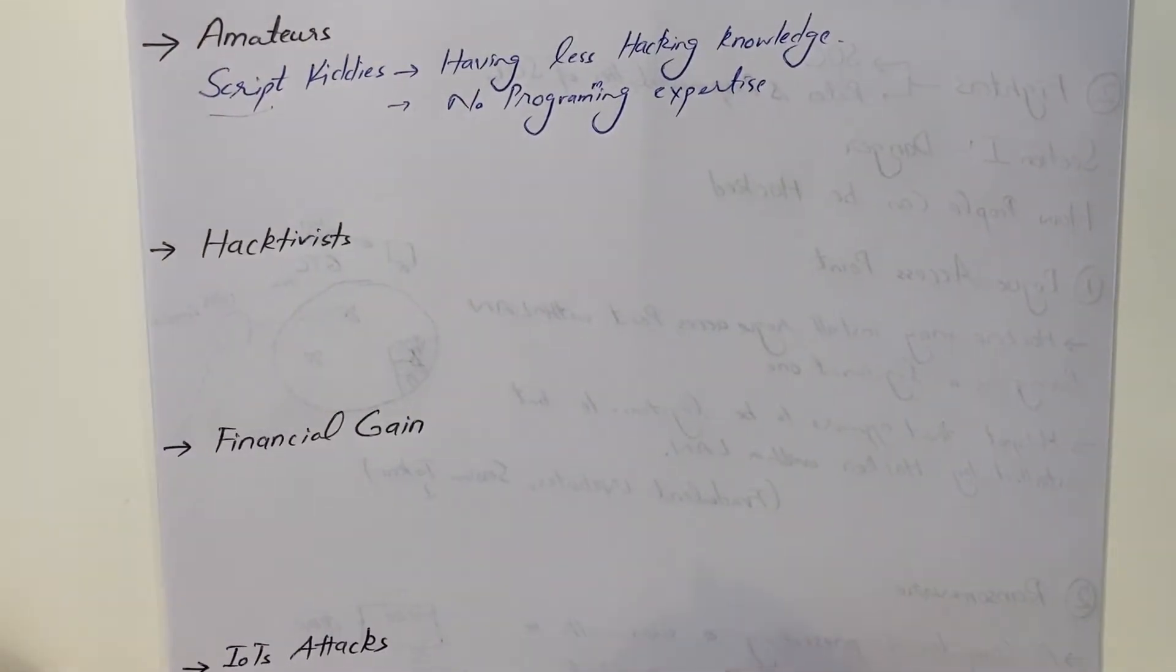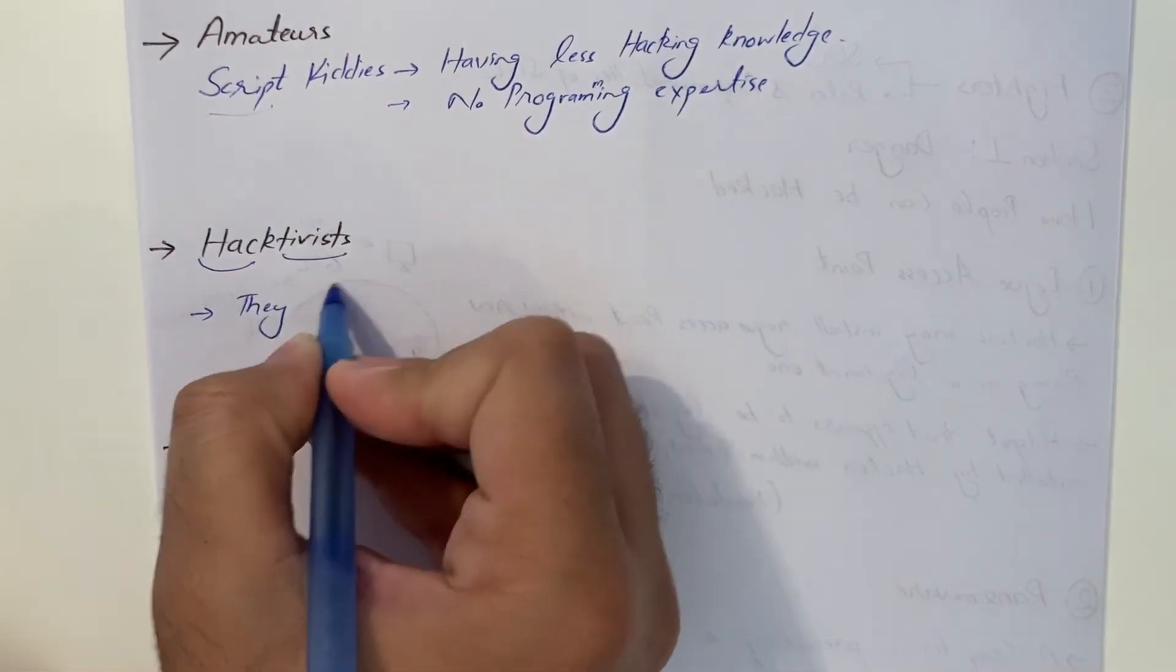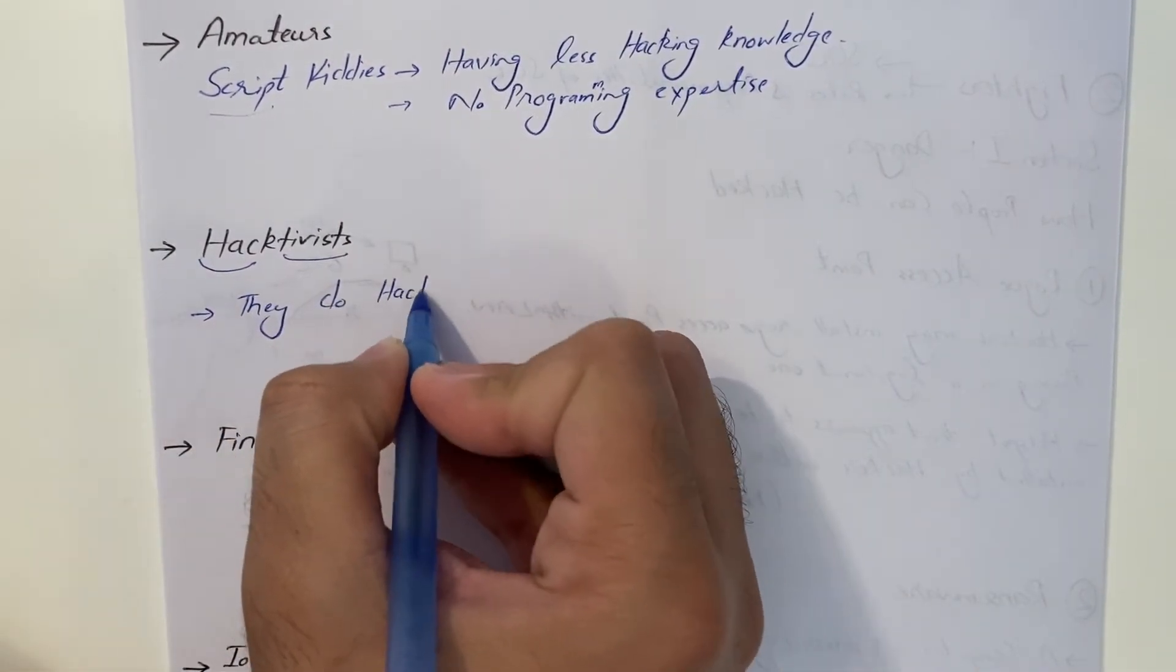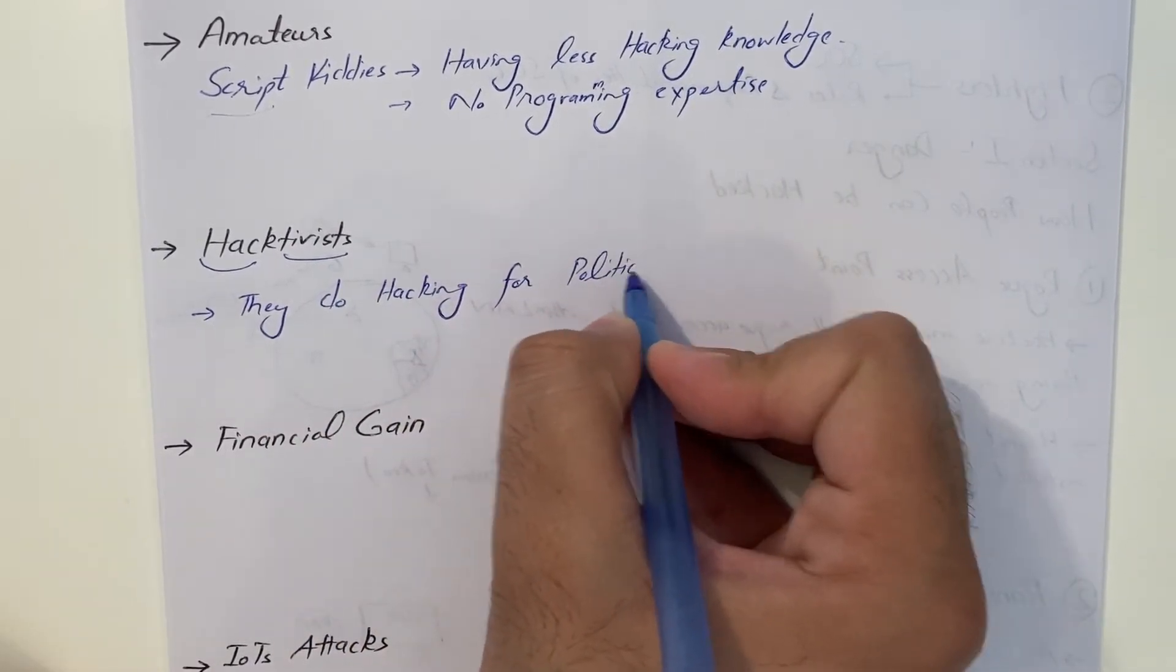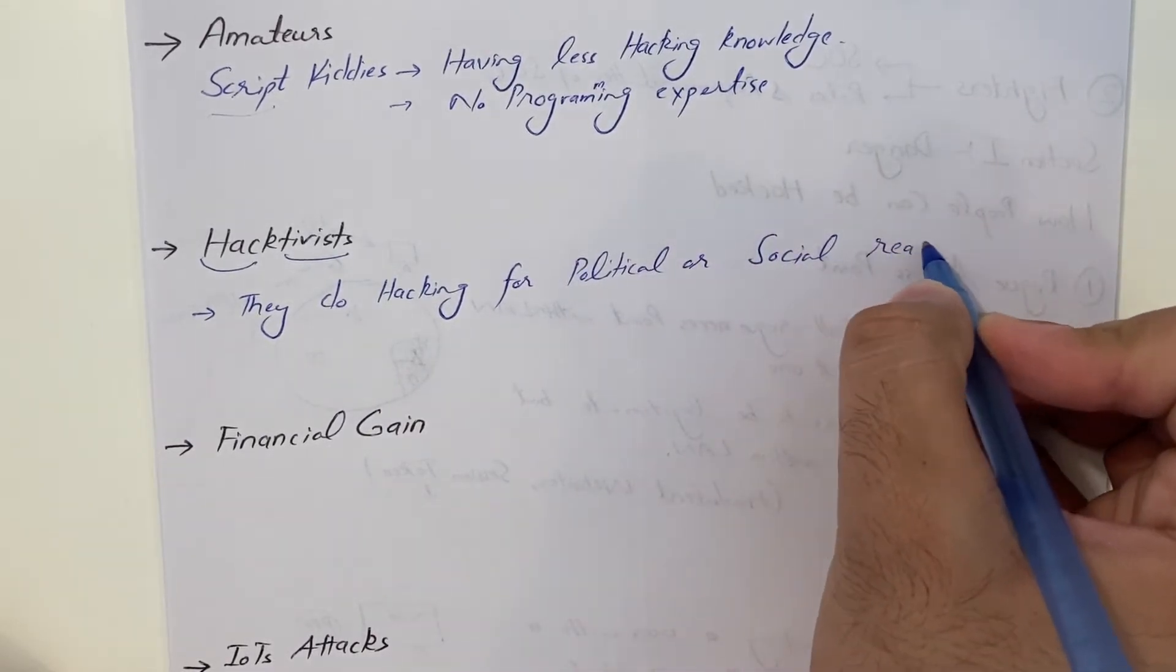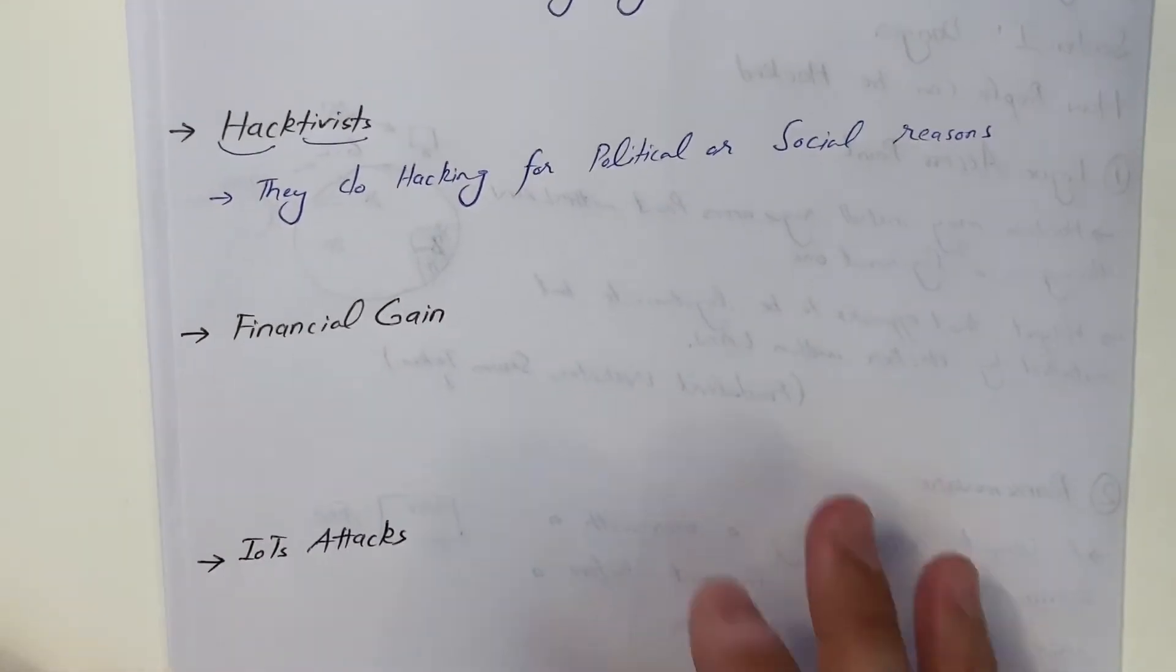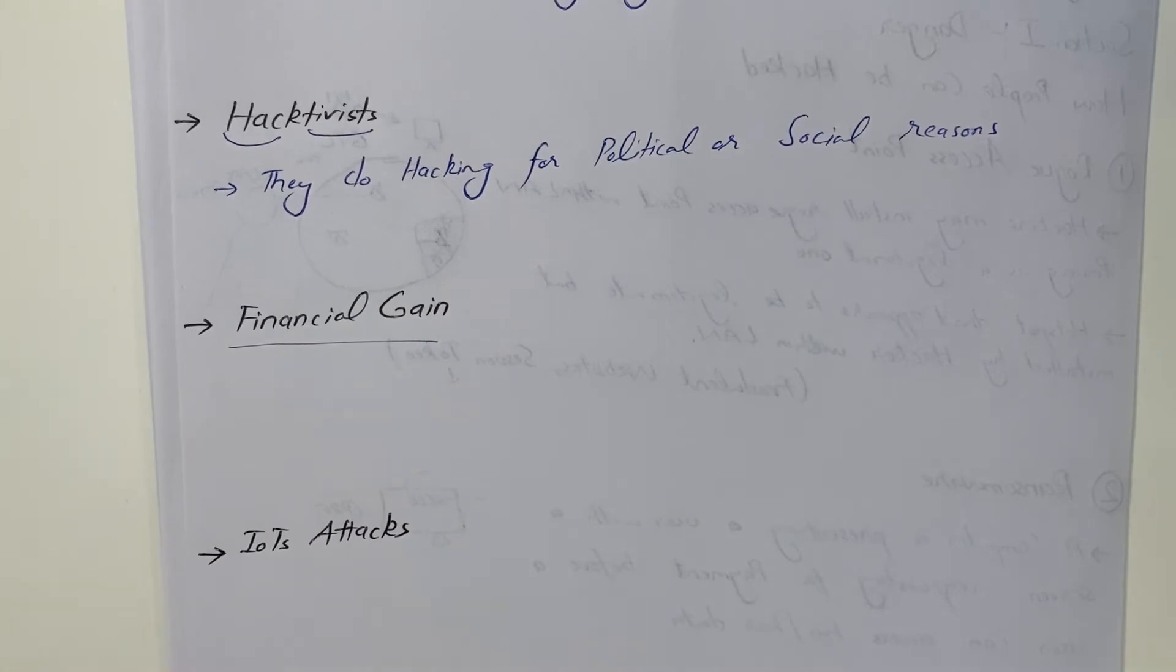Next is the hacktivists, as name suggests, hacker activists. They do hacking for political or social reasons. Then we have most of the other hackers who do hacking for financial benefits. That's the highest motivation for most of the hackers, even for the bug bounty hunters as well. They do all these bug bounties just for the financial gain.